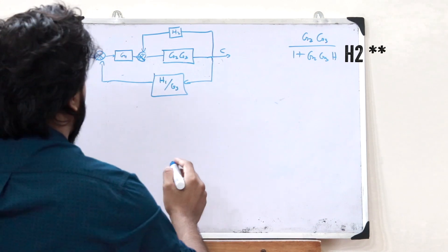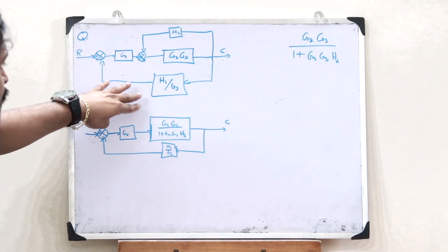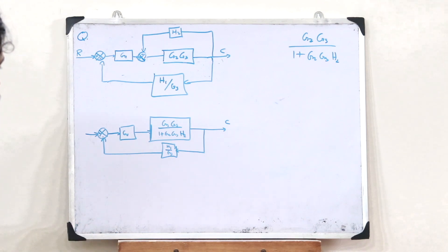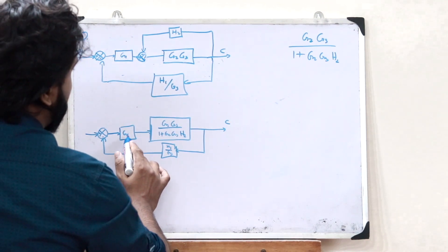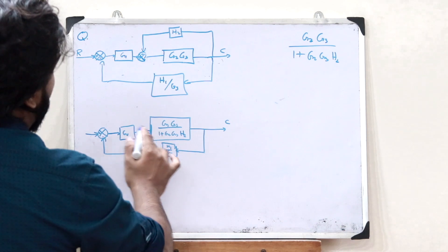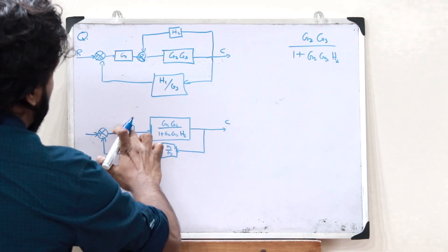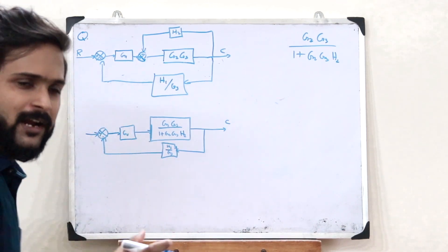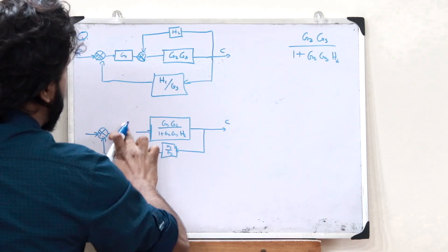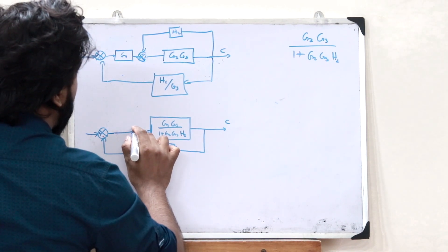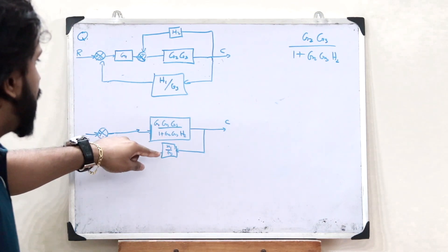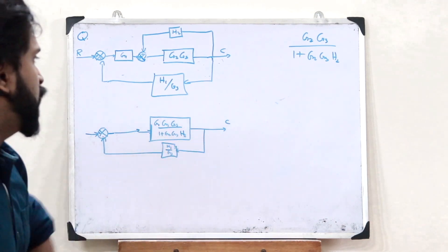Drawing the reduced diagram again, we observe that G1 and the block G2G3/(1+G2G3H2) are now in series. Multiplying these two series blocks together gives G1·G2·G3 divided by (1 + G2·G3·H2).